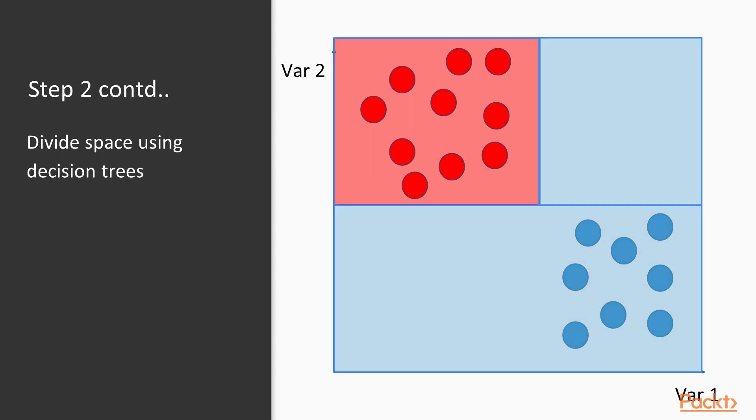So then we may apply another decision tree. This is simply the inverse. So if it's greater than a certain value in variable 2, and less than a certain value in variable 1, make it red.